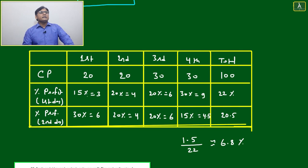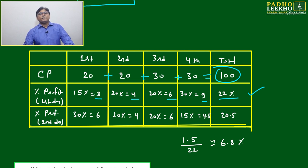First, second, third, fourth articles. Cost price: 20, 20, 30, 30 - total 100. Profits: 15% equals 3, 20% equals 4, 20% equals 6, 30% equals 9. Total 22. Father made 22% profit on the first day - 22 out of 100.